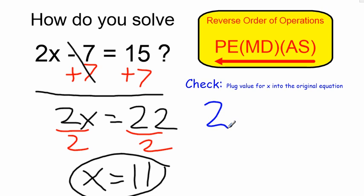I can check by putting 11 into my original equation, and I want to see if 2 times 11 minus 7 is in fact equal to 15.